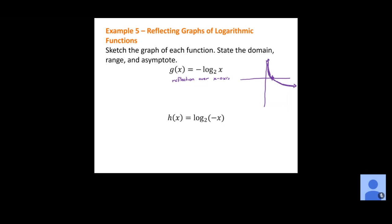Now h(x) = base 2 log of negative x. The negative on the inside gives a reflection over the y-axis. When we sketch this graph, the point at (1, 0) reflected over the y-axis shifts to (-1, 0). The basic shape of base 2 log of x was going up and to the right; now it's coming in and going down, approaching the horizontal asymptote from the left-hand side instead.